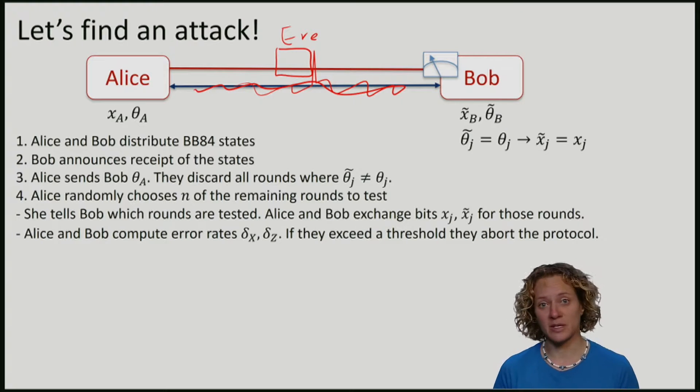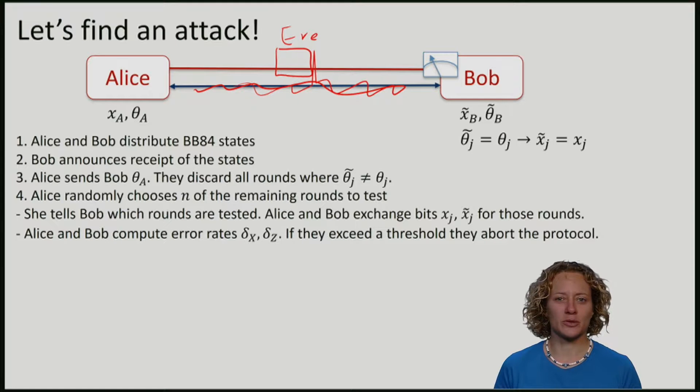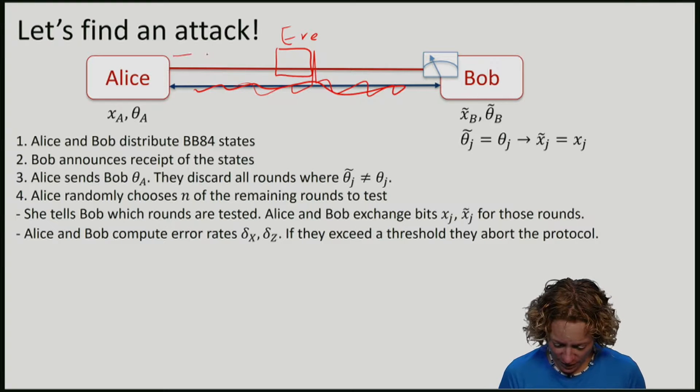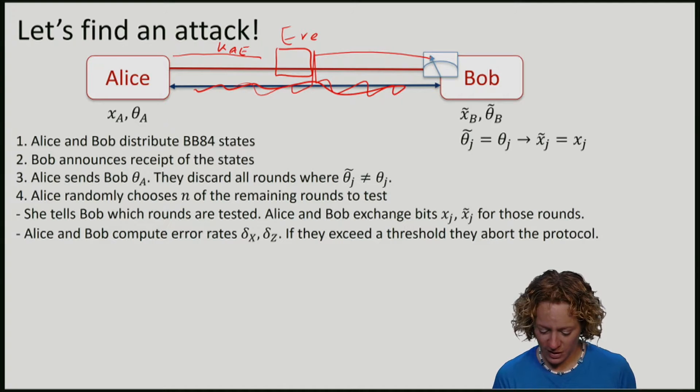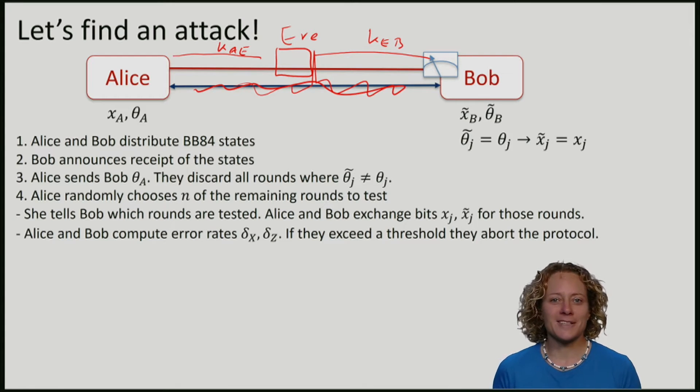Towards Bob, she will pretend to be Alice. So Alice runs a protocol with Eve, basically generating a key shared between Alice and Eve. Eve runs a protocol with Bob, generating a key Eve-Bob. So at the end there is a situation where Eve shares a key with Alice and Bob shares a key with Eve.